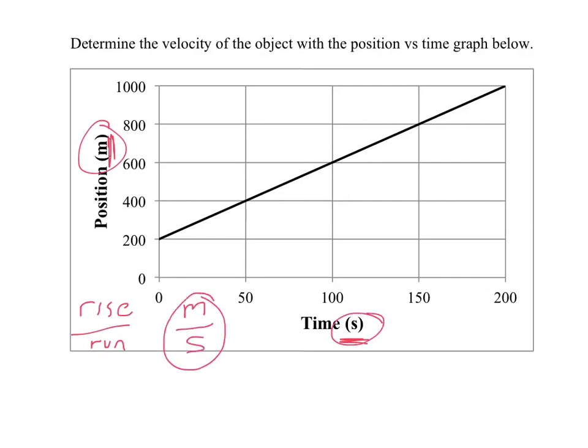So when you do that, you get meters per second, which is the velocity. That's how you can know that the slope of a position versus time graph will give you velocity.